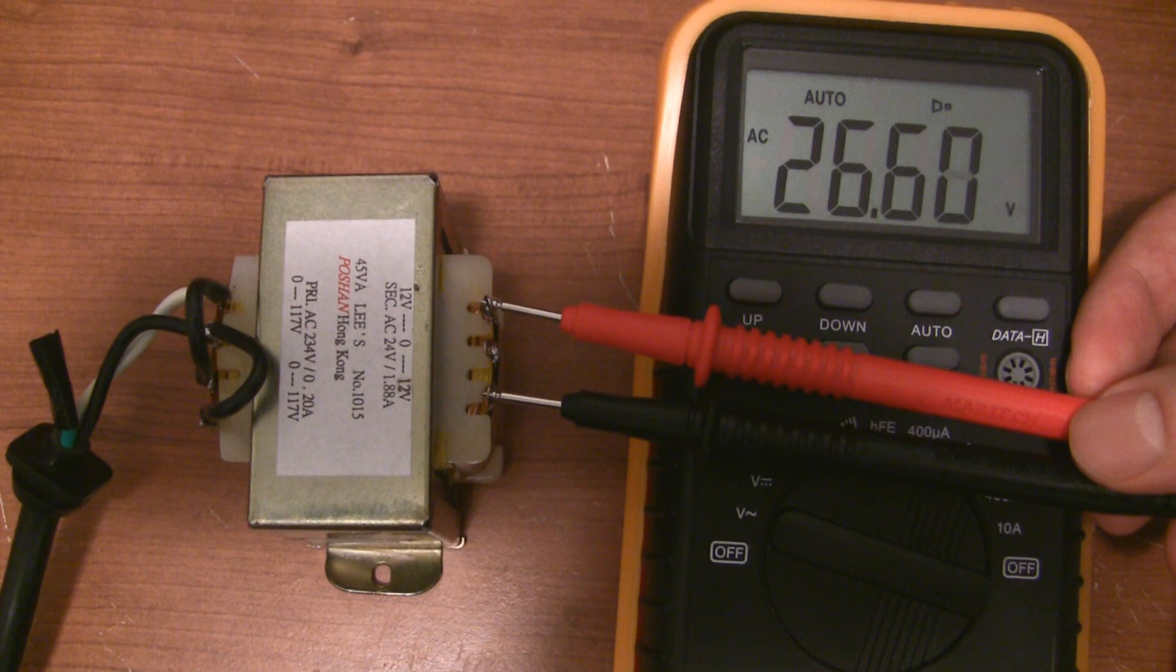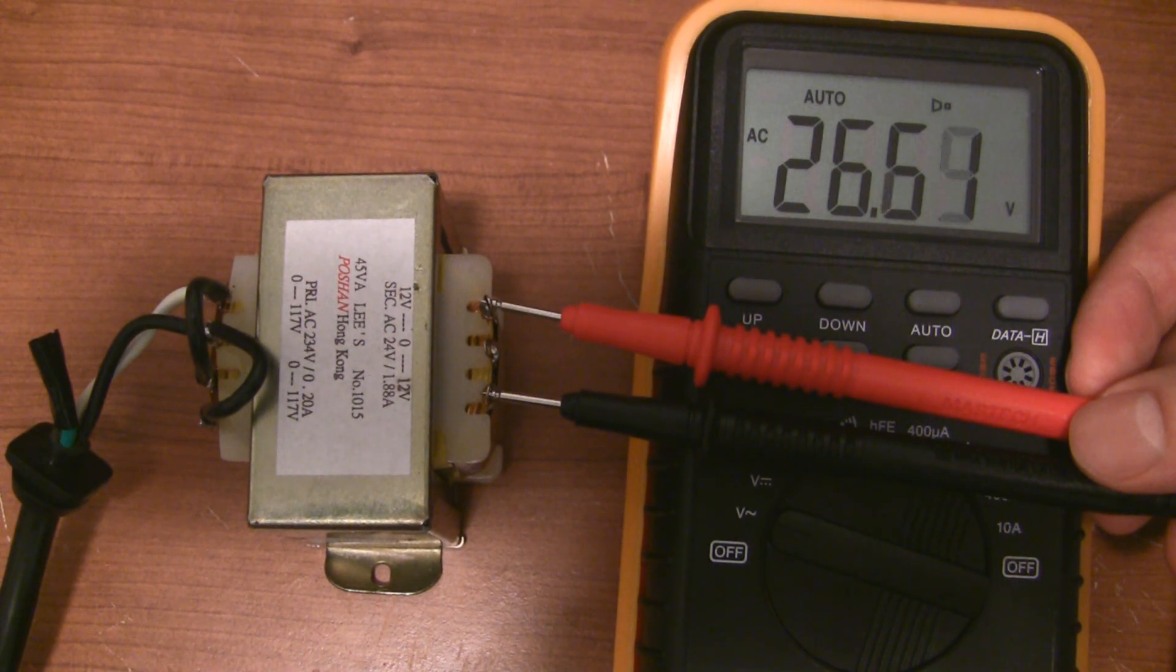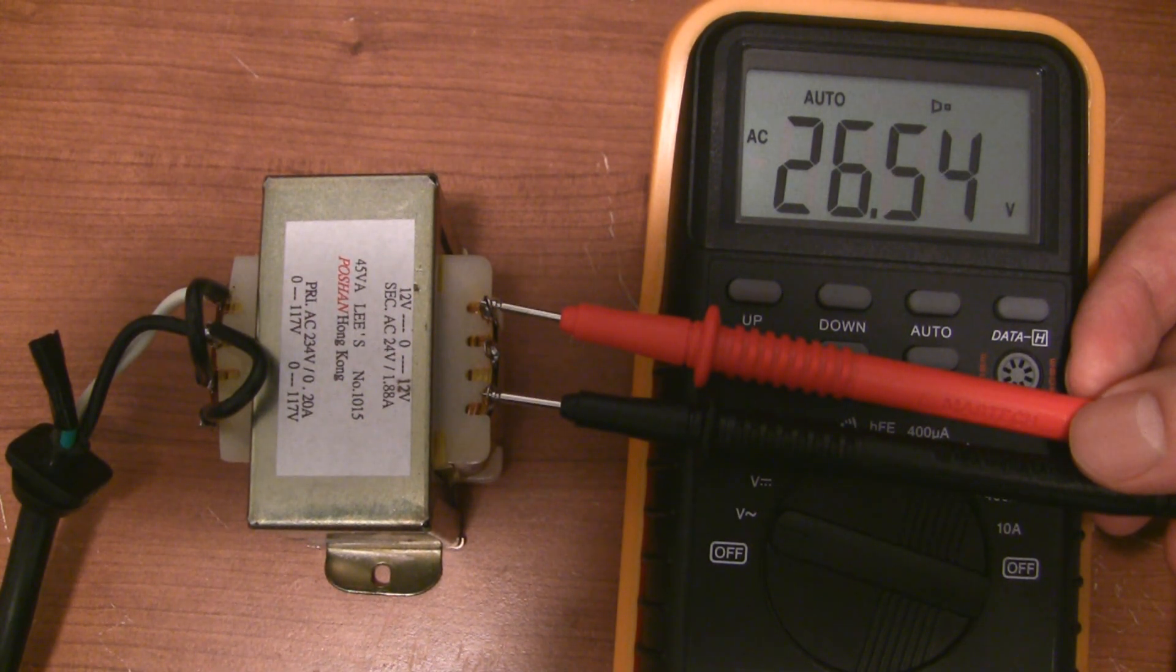Now, let's see what's happening on the secondary side. Well, on the outer terminals we're getting about 27 volts AC, and that should drop down to 24 once you put a load on it. Excellent!